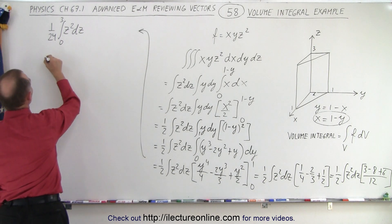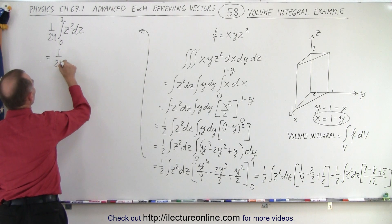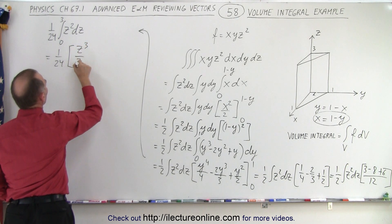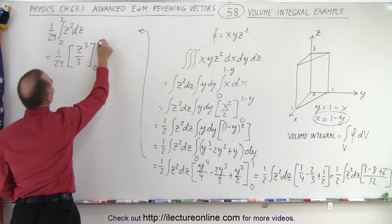So now we can integrate that. This is equal to 1 over 24 times z cubed over 3, evaluated from 0 to 3.